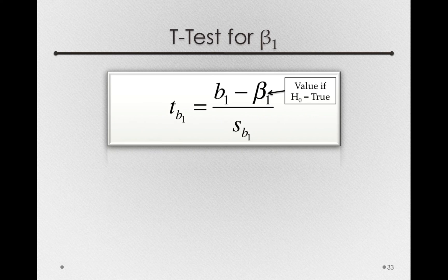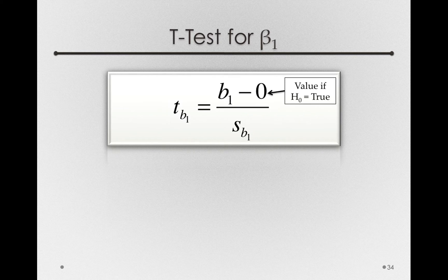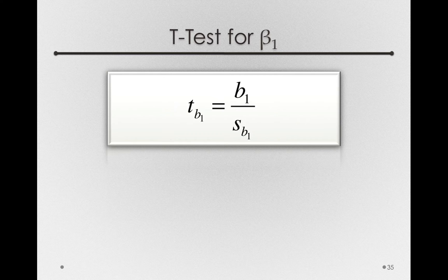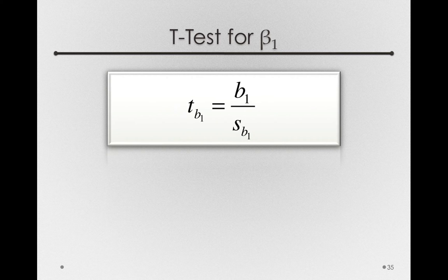In our t-test, the value of beta1 here is actually zero, so the numerator simply has the estimate from our sample, b1, divided by the standard error of b1.